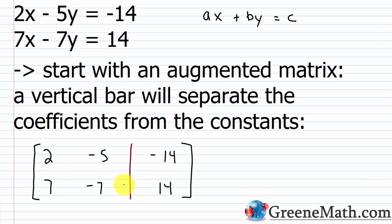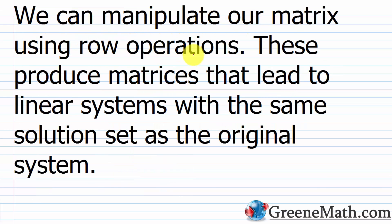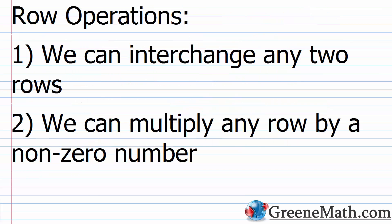From this augmented matrix, we can get a solution for x and y using elementary row operations — there are three of them. We can manipulate our matrix using these operations, which produce matrices that lead to linear systems with the same solution set as the original. First, we can interchange any two rows. Second, we can multiply any row by a non-zero number.